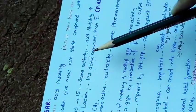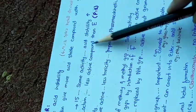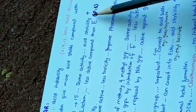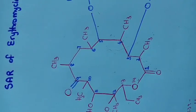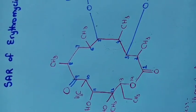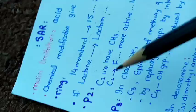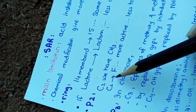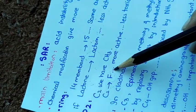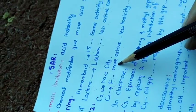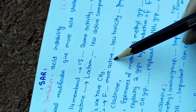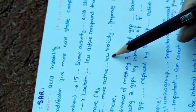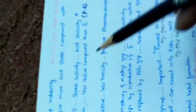At position 2 we have a methyl group. If this methyl group at position 2 is replaced with fluorine, we get a compound which is more active, less toxic, and has improved pharmacokinetic properties.